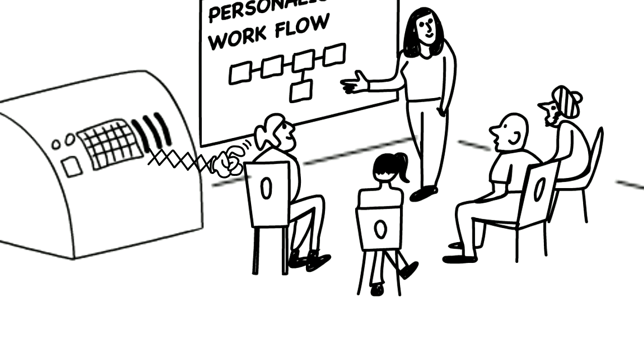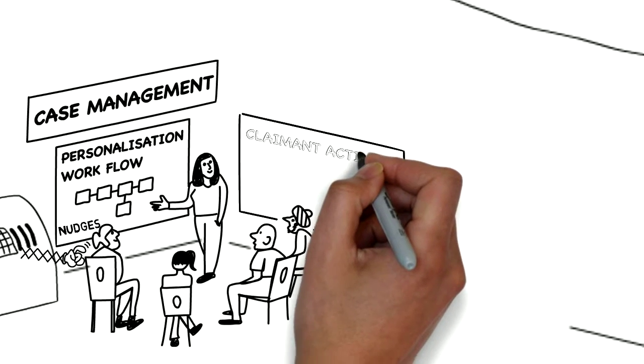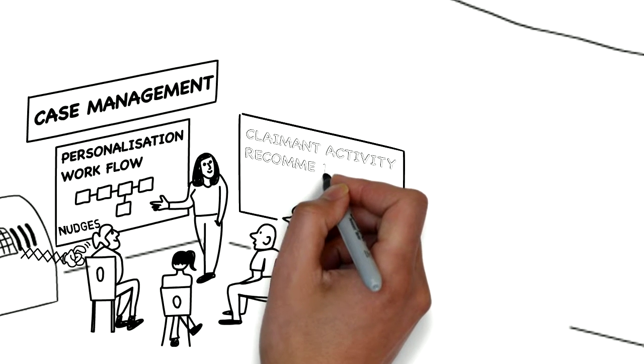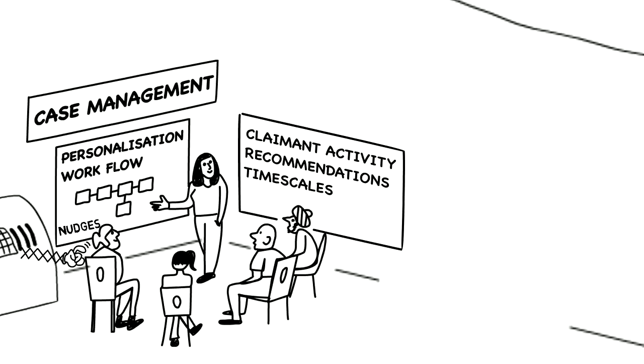There will be automatic nudges to encourage claimants to move to the next step. These nudges require less work coach intervention and are designed to deliver a service that cares. The system will record activities that the claimant has participated in, the recommendations made by the work coach and, importantly,